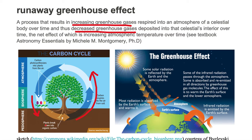Now what's the effect or the net result of putting more greenhouse gases in an atmosphere of a celestial object? Well, the net effect is going to be an increasing atmospheric temperature over time. So let's take a look at the greenhouse effect.